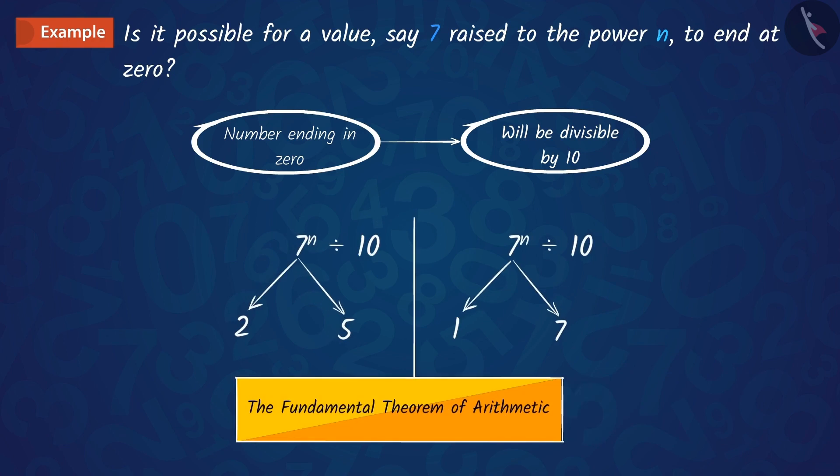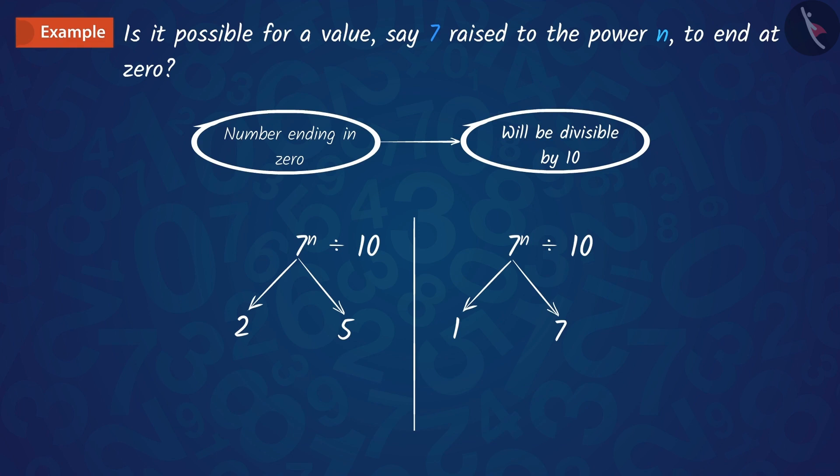So, the uniqueness of the fundamental theorem of arithmetic guarantees that there are no other primes, that is, 2 and 5, in the factorization of 7 raised to the power n.